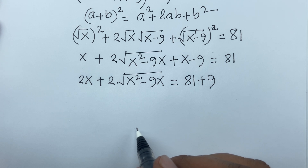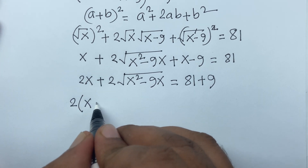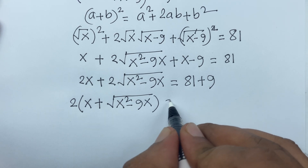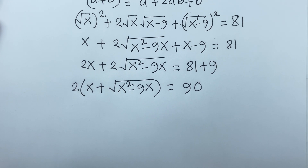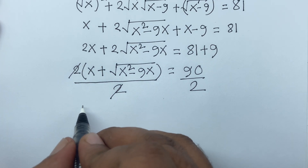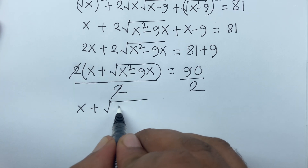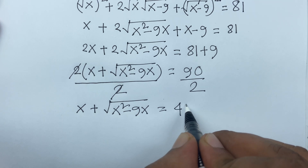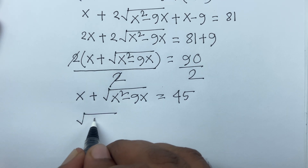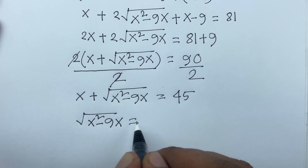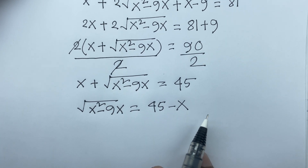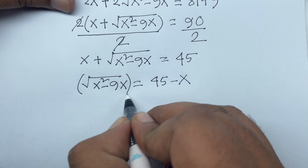Factoring out 2, we get 2 times the quantity x plus square root of x squared minus 9x equal to 90. Dividing both sides by 2, we find x plus square root of x squared minus 9x is equal to 45. Then moving x to the right side, square root of x squared minus 9x is equal to 45 minus x. We square both sides again to eliminate the square root.